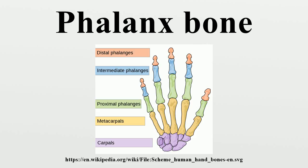The intermediate phalanx is not only intermediate in location, but usually also in size. The thumb and large toe do not possess a middle phalanx. The distal phalanges are the bones of the tips of the fingers or toes. The proximal, intermediate, and distal phalanges articulate with one another through interphalangeal articulations.